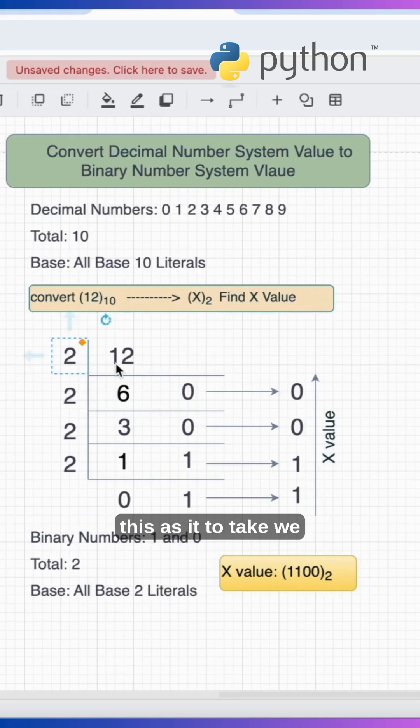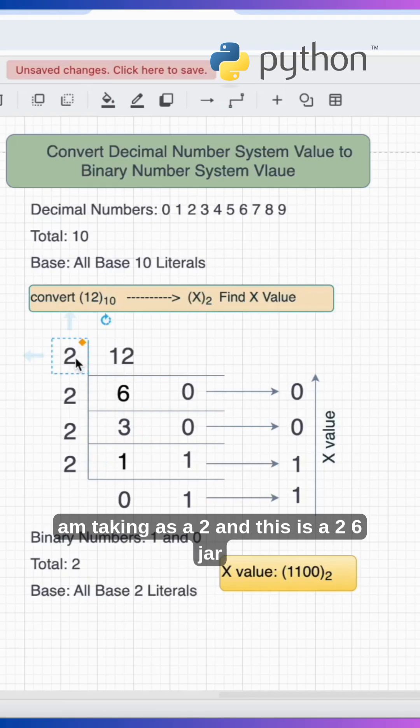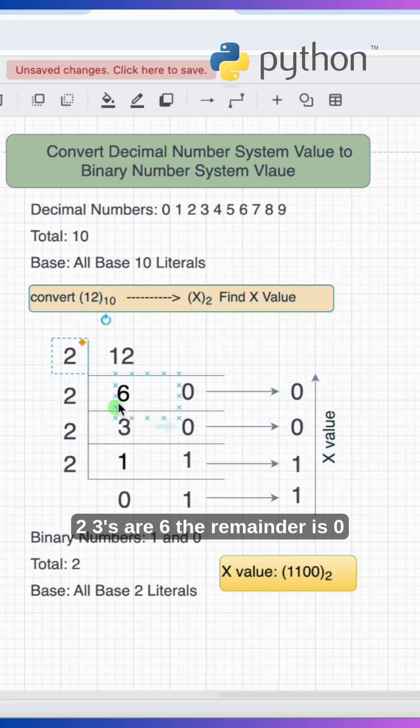You can consider this as 2, and we need to convert it to binary, right? So I am taking 2 - 2 goes into 12 six times with remainder zero, 2 goes into 6 three times with remainder zero.